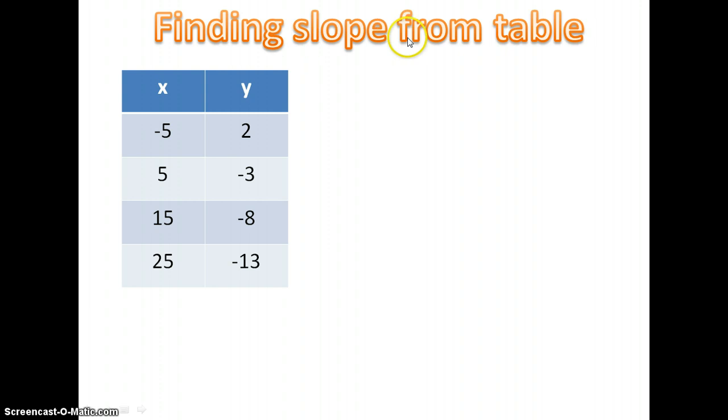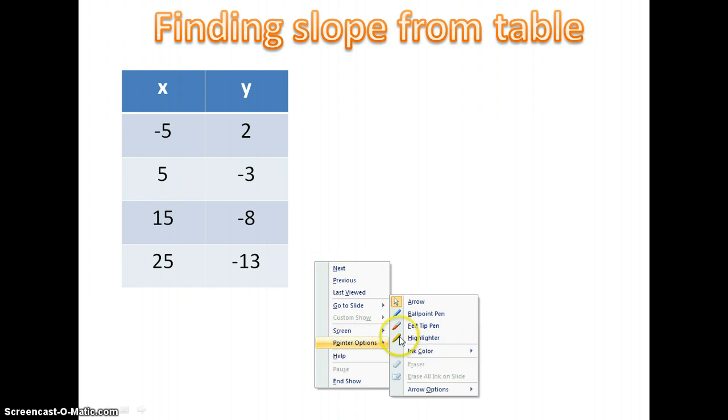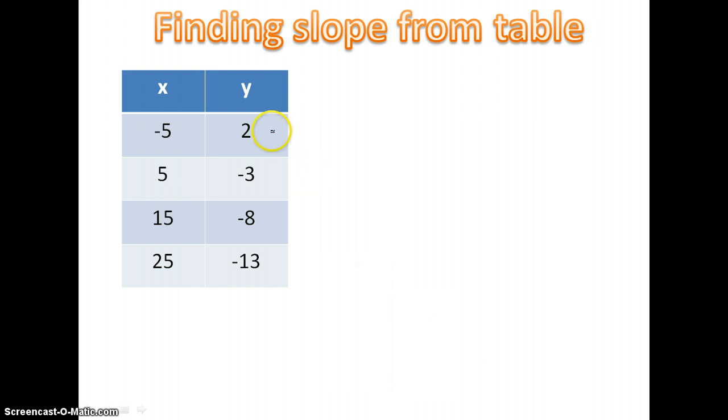So if we're finding slope from a table, we have this table and we're going to find the slope of it. The first thing we need to do is find the change in y over the change in x. So we need to figure out how did I go from 2 to negative 3? Well I subtracted 5.